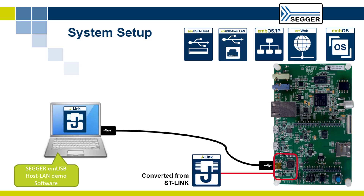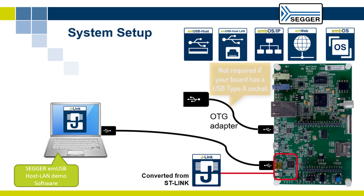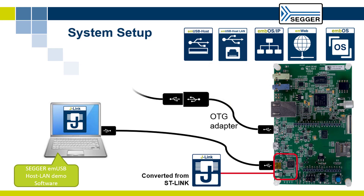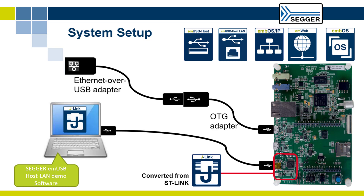Connect an OTG adapter to the USB high-speed connector on the ST Board. Then connect an Ethernet over USB adapter to the OTG connector. Finally, connect the Ethernet over USB adapter to your local area network.